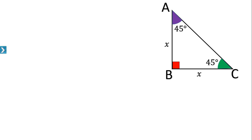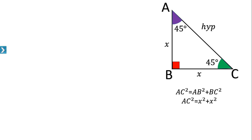Now in triangle ABC, AC is the hypotenuse — the side opposite to the right angle. We can find the length of AC using the Pythagorean theorem: AC² = AB² + BC². Since AB = x, we get AC² = x² + x².